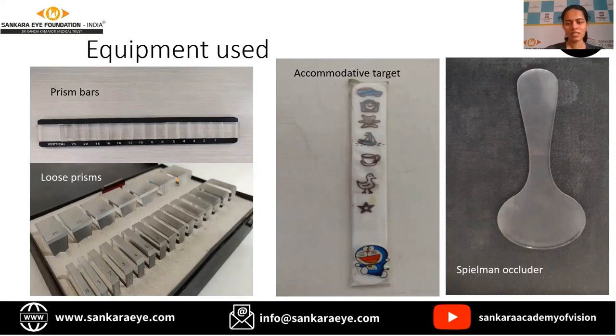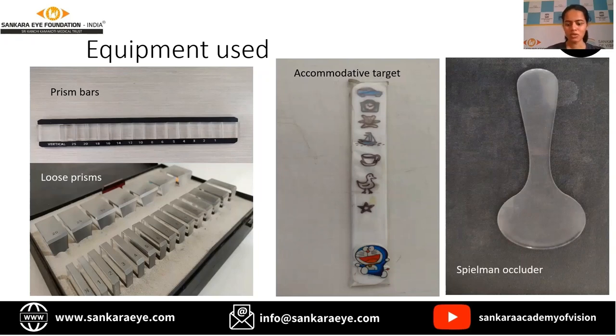As the fixation target, for distance fixation we generally use our distance visual acuity chart like the Snellen's chart. Whereas for near, we use an accommodative target like I have shown here.